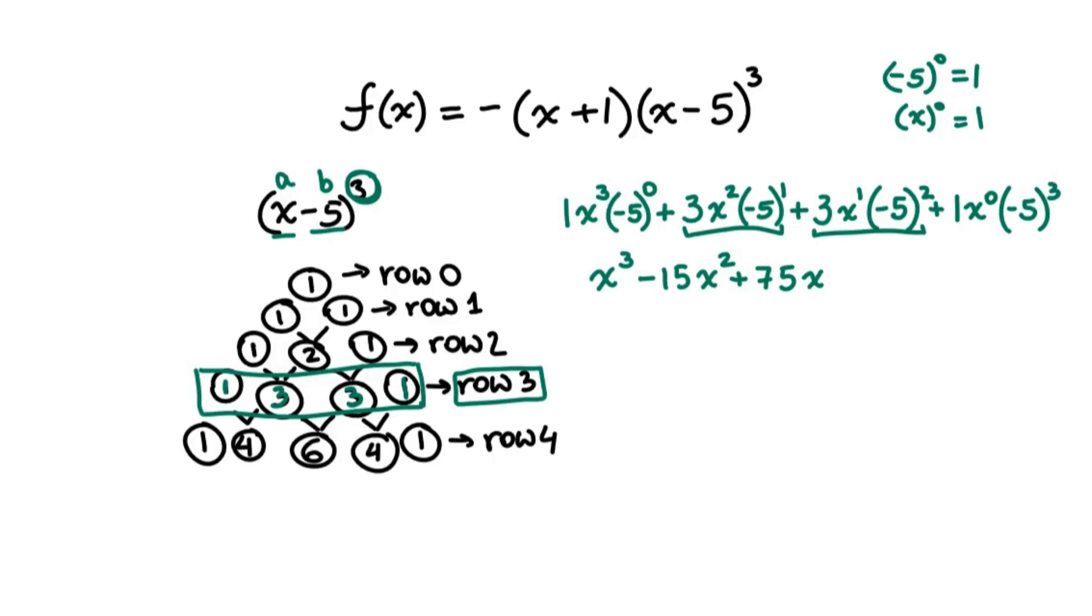And the last term. We have a coefficient of 1. We have negative 5 to the power of 3, which is negative 5 times negative 5 times negative 5. And then we also have x to the power of 0, and x to the power of 0 is equal to 1. Negative 5 cubed is negative 125, so we're going to write it down as a constant. And we already have our expression in the most simplified expanded form: x cubed minus 15x squared plus 75x minus 125. It starts with the highest exponent and goes down to the lowest exponent of 0, where there is just a constant, right?